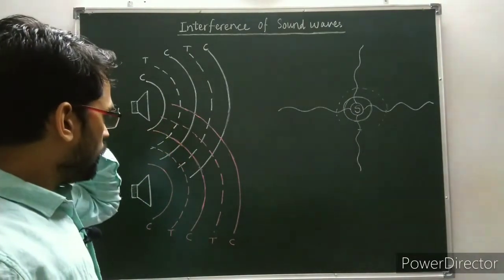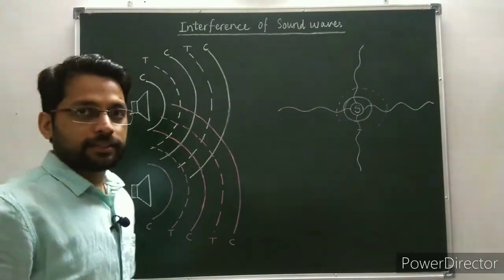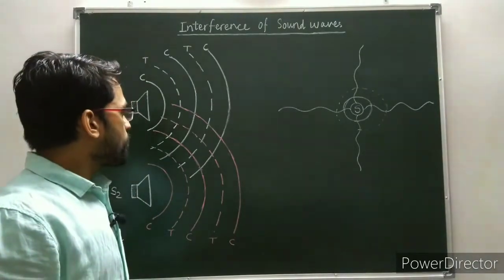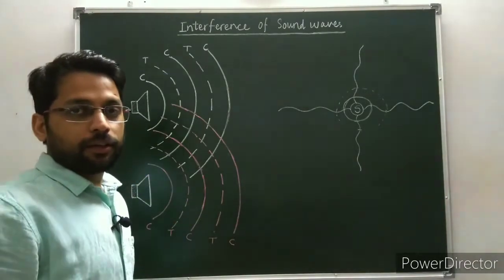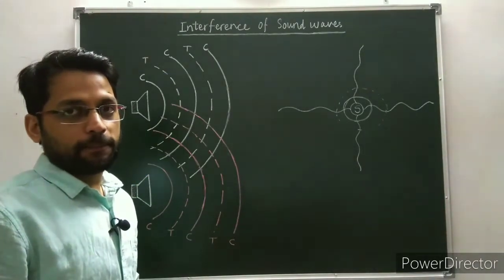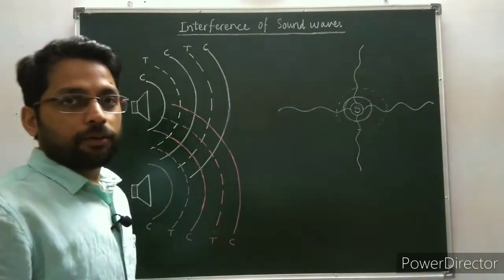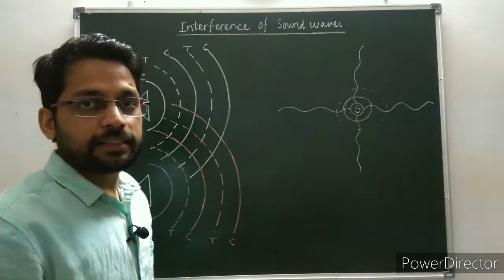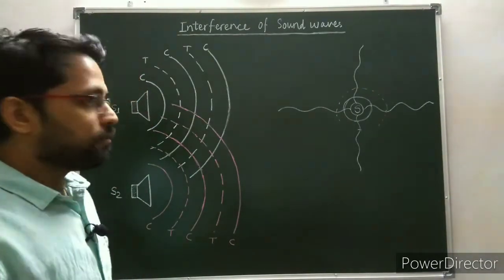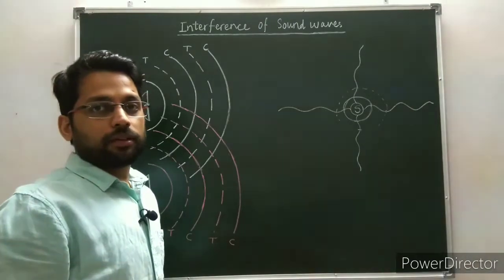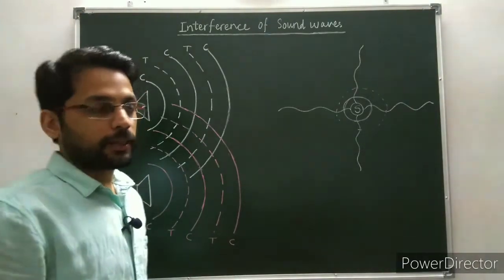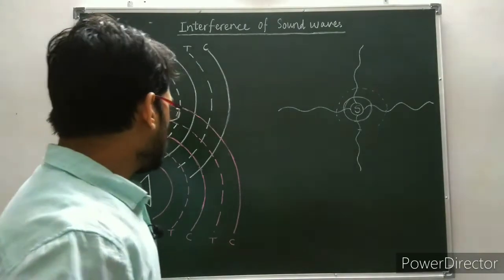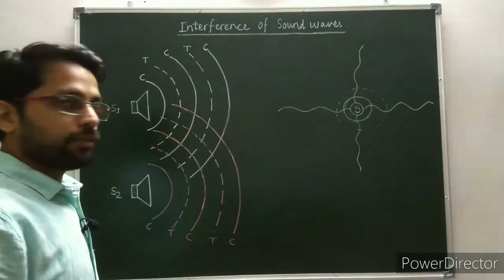Due to the interference, there are some points where we get maximum intensity and there are some other points where we get minimum intensity. Those points where we get maximum intensity of sound are known as constructive interference. The question is: what is the cause of interference? This is actually due to the superposition of the two waves.